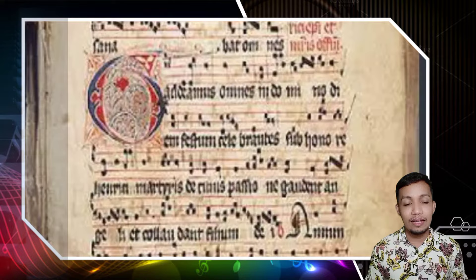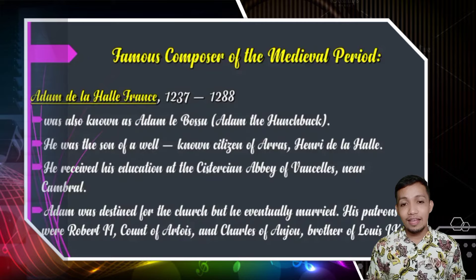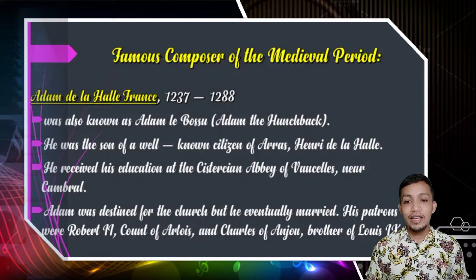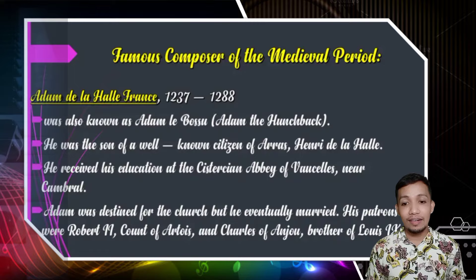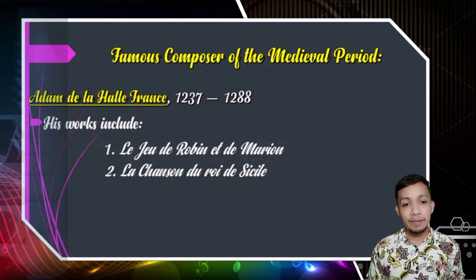The most famous composer during the medieval period was Adam de la Halle, and he was from France. He was born in the year 1237 and died in the year 1288. He was also known as Adam le Bossu, or Adam the Hunchback. He was the son of a well-known citizen of Arras, Henry de la Halle. He received his education at the Cistercian Abbey of Vaucelles, near Cambrai. Adam was destined for the church, but he eventually married. His patrons were Robert II, Count of Artois, and Charles of Anjou, brother of Louis IX. And his works include Le Jeu de Robin et de Marion and Le Chanson du Roy de Cécile.